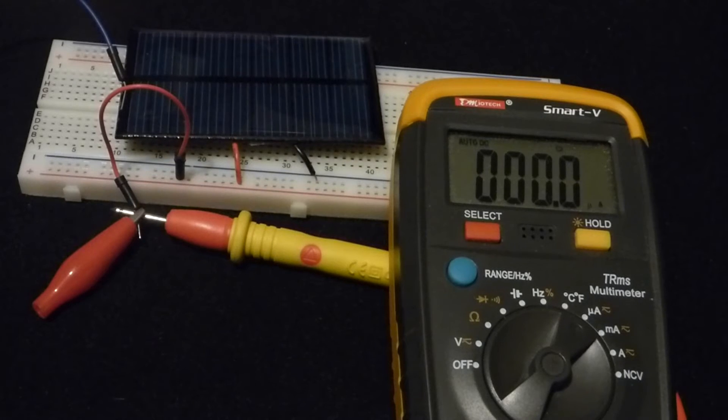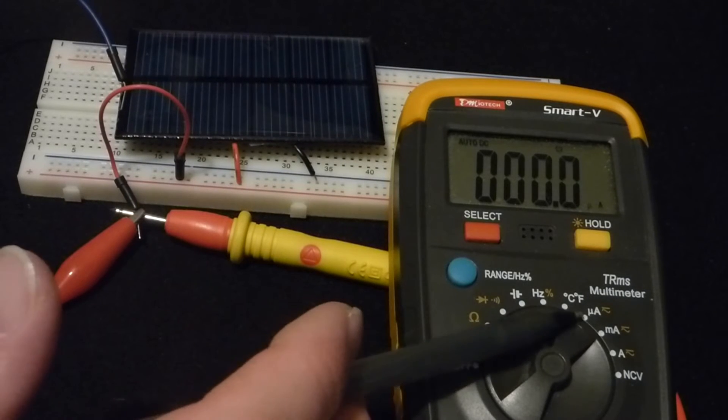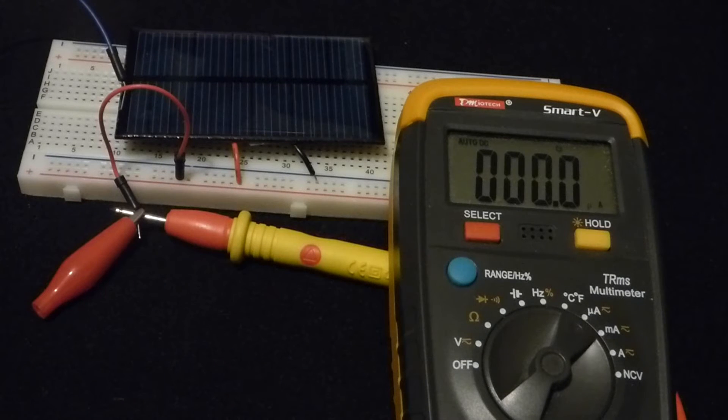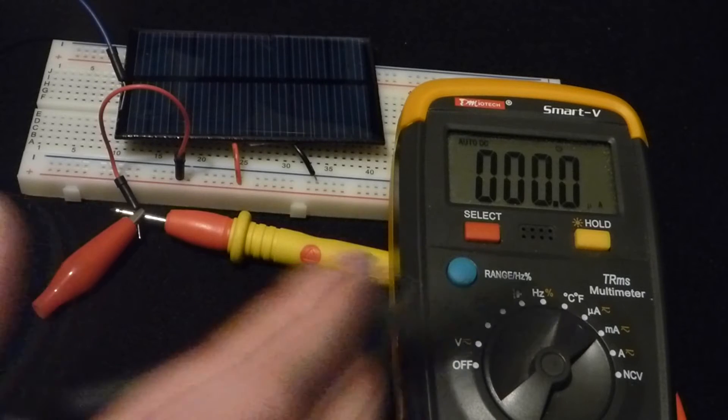So now we're going to take some current measurements. Right now I have the meter set to microamp. So you need 1,000 microamps to equal 1 milliamp. A microamp is very small.